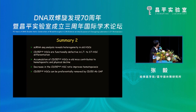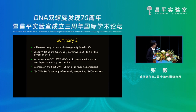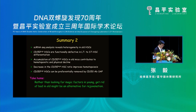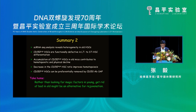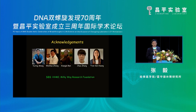To summarize: using single-cell RNA-seq, we revealed heterogeneity in old HSCs. CD150-high HSCs are functionally defective in long-term to short-term differentiation. Accumulation of CD150-high HSCs in old mice contributes to hematopoietic and physical decline. Decreasing the CD150-high ratio improves hematopoiesis, and CD150-high HSCs can be preferably removed by our antibody-toxin complex. The take-home message is very simple: rather than looking for magic factors in young blood, getting rid of bad cells in old might be an alternative approach to rejuvenation. Thank you.